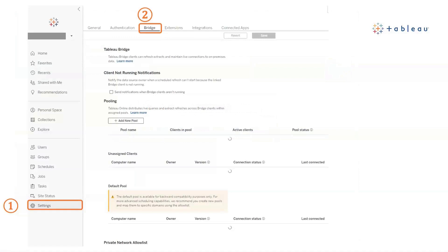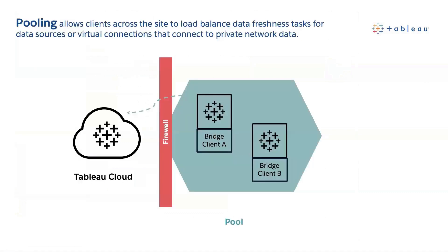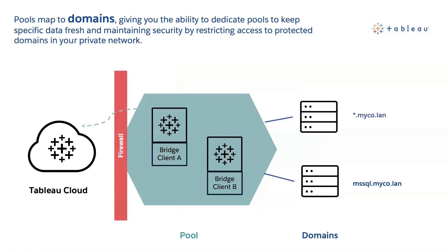Now that Bridge is set up, let's sign in to Tableau Cloud using your site admin credentials and go to the settings page, then click the Bridge tab. Here, site admins can configure and manage pooling for Bridge clients. The purpose of a pool is to load balance data freshness tasks among available clients in a pool, whose access is scoped to one or multiple domains within your private network. Pools map to domains, giving you the ability to dedicate pools to keeping specific data fresh and maintaining security by restricting access to protected domains in your private network.